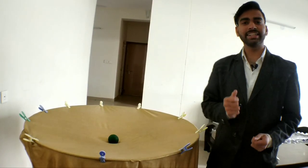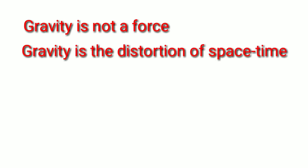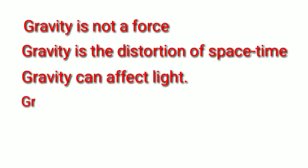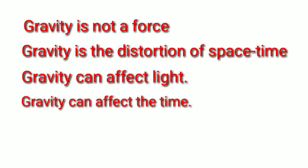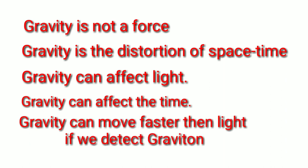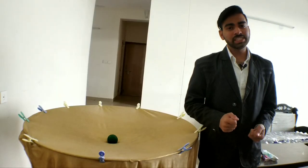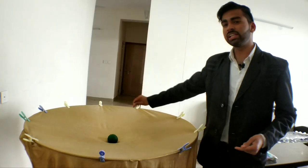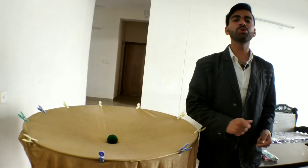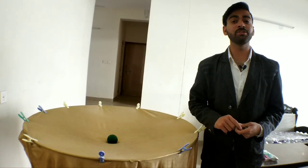From this theory, we can say that gravity is not a force — gravity is just the distortion of space-time. Gravity can affect light. Gravity can affect time. Gravity may move faster than light if we detect the graviton. In the next video, you will see that this model can also explain gravitational waves.